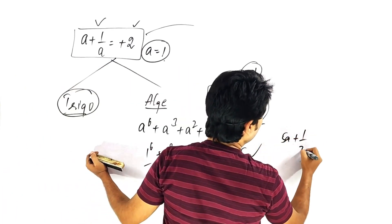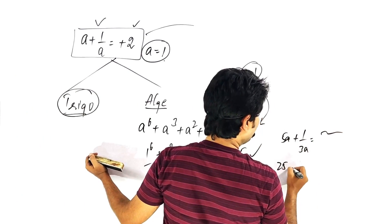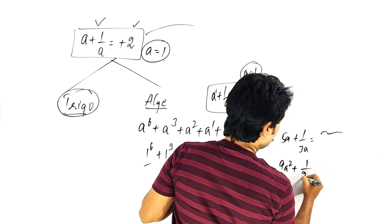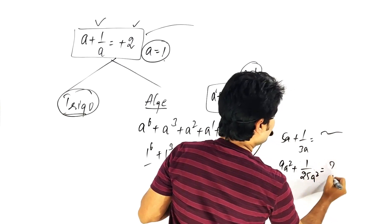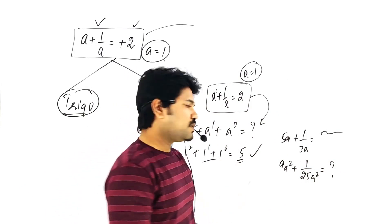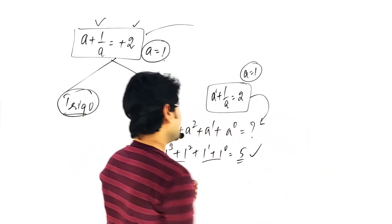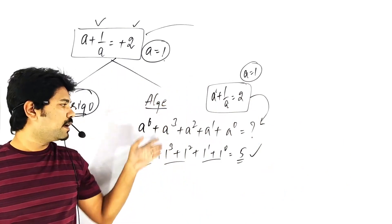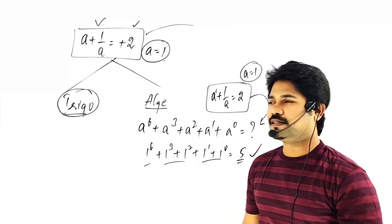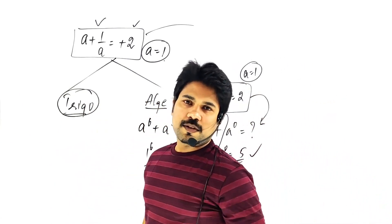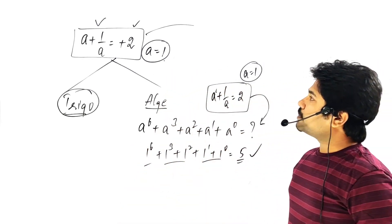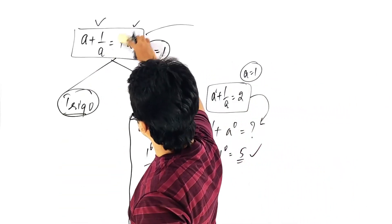This is the latest trend in exam questions. For example, 5a plus 1 by 3a equals some value, then find 9a squared plus 1 by 25a squared. This is the kind of question pattern. Now a plus 1 by a equals 2 gives a equals 1, and the minus 2 pattern gives a equals minus 1.